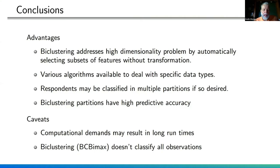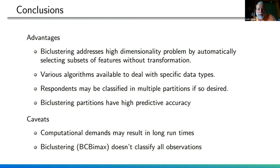Their conclusions: bi-clustering addresses the high dimensionality problem by automatically selecting feature subsets without weighting or transformation. Various algorithms handle specific data types, and by default respondents can be assigned to just one segment. Bi-clustering segments have very high predictive accuracy. The one big downside is that it's computationally intensive — Joe's analysis took four days to run on his fast computer. But given how often segmentation studies require redoing when clients aren't happy, a four-day runtime shouldn't necessarily scare you off from this elegant solution.